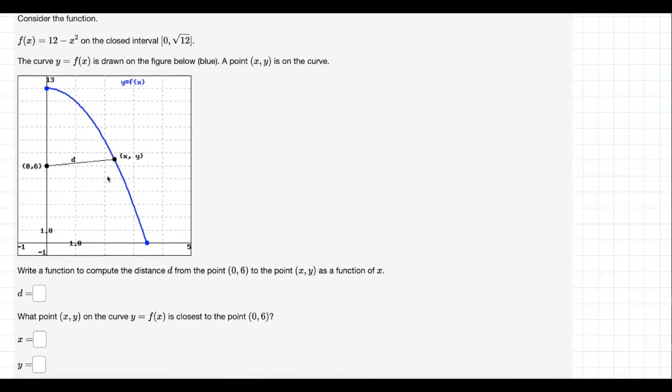This is an arbitrary point on the curve. Write a function to compute the distance d from the point (0, 6) to the point (x, y) as a function of x. What point (x, y) on the curve is closest to the point (0, 6)?